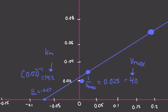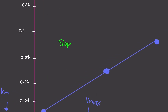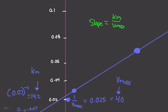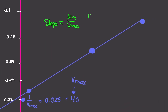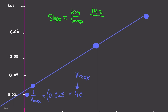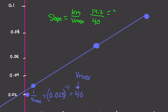Now we can calculate the slope. The slope of the line equals Km over Vmax. The Km value we calculated was 14.2, and the Vmax value was 40. So 14.2 divided by 40 gives us a slope of 0.355.